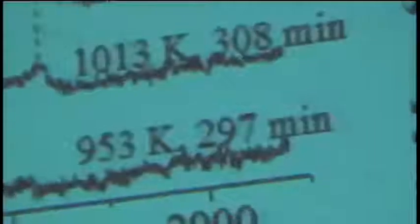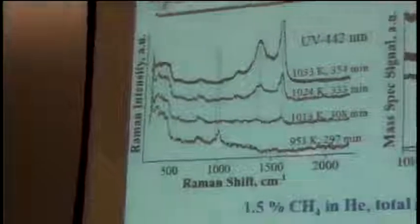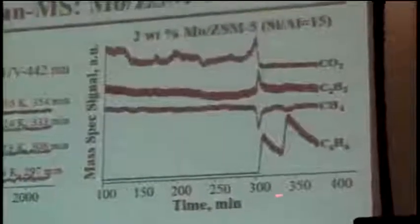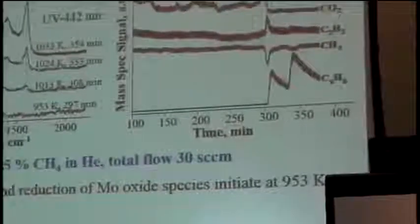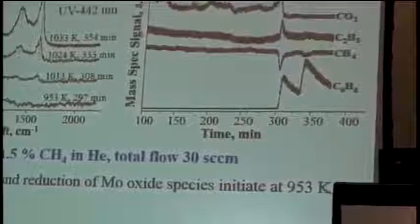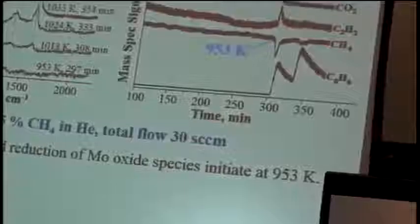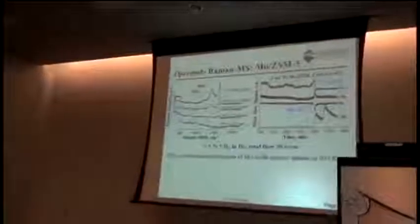So now what happens to those molybdenum oxide species under reaction conditions? In this experiment, we were raising the temperature, collecting the Raman spectra as a function of time, so it's a function of temperature as well. And then we were monitoring the products that we are producing during that reaction. So this is the definition of operando, collecting spectroscopic results as you are monitoring the consumption of the feed and production of products. So initially, we have the Raman bands at 975 and 993, for single and double aluminum sites.